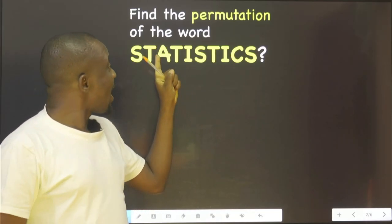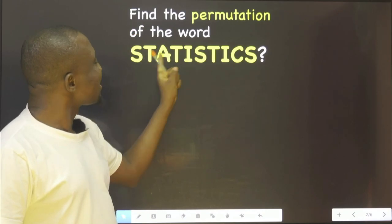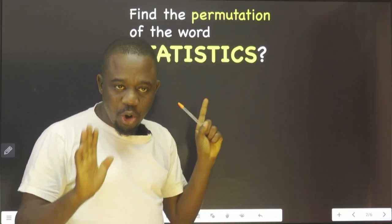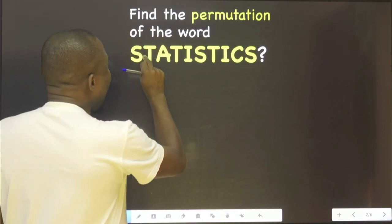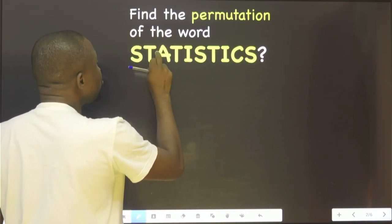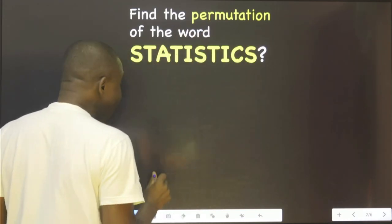Let's work on this. As you can see, it says find the permutation of the word STATISTICS. All you need to do is count how many letters: one, two, three, four, five, six, seven, eight, nine, ten. Ten letters.